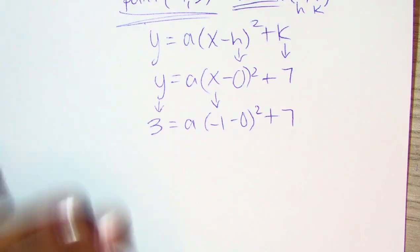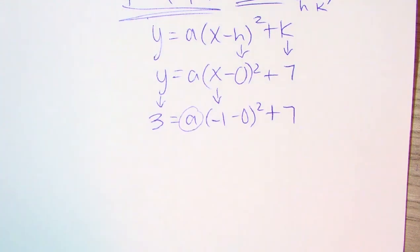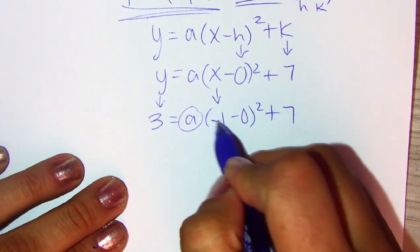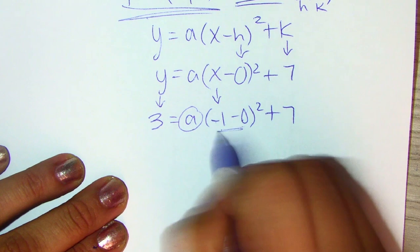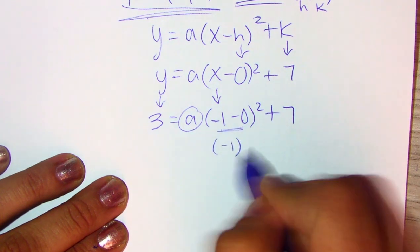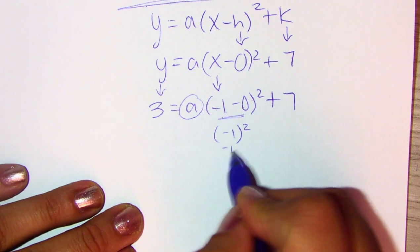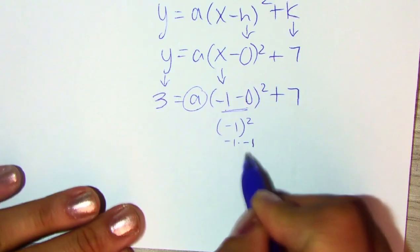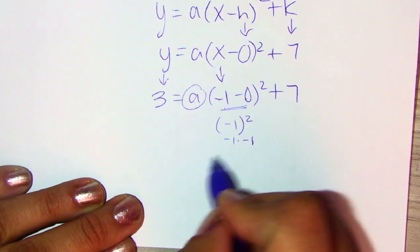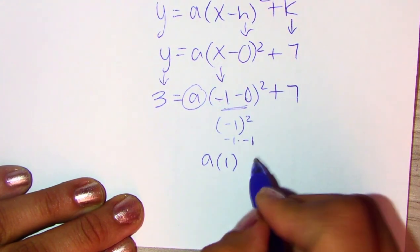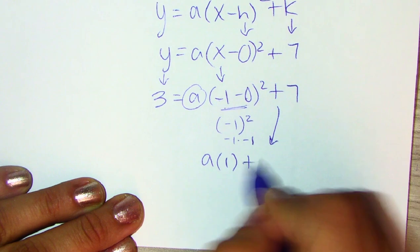And then, as you notice, we only have the A value needing to be solved here. So, we're going to do negative 1 minus 0 to simplify. That results in negative 1. And then, we're going to square that. So, that's negative 1 times negative 1, which is positive 1. So, we're going to have A times positive 1 plus 7.